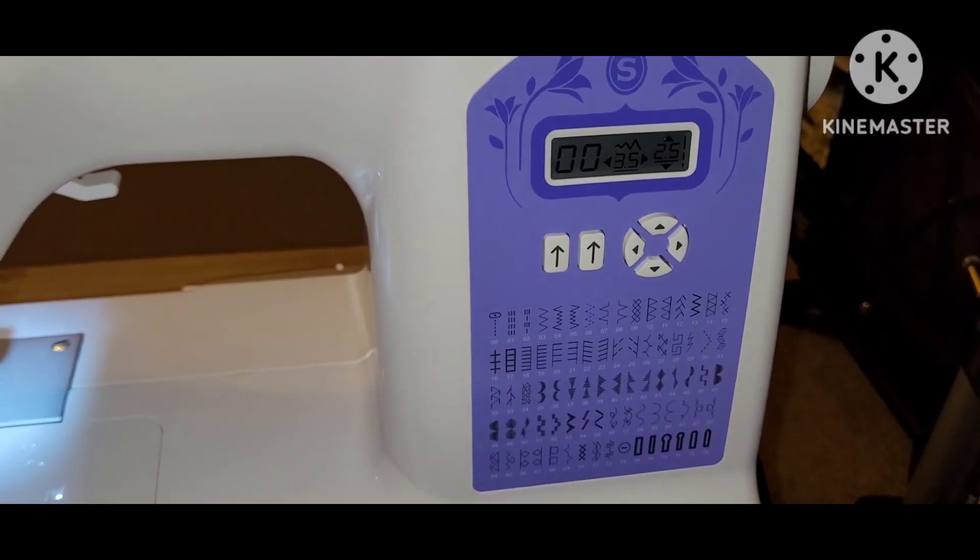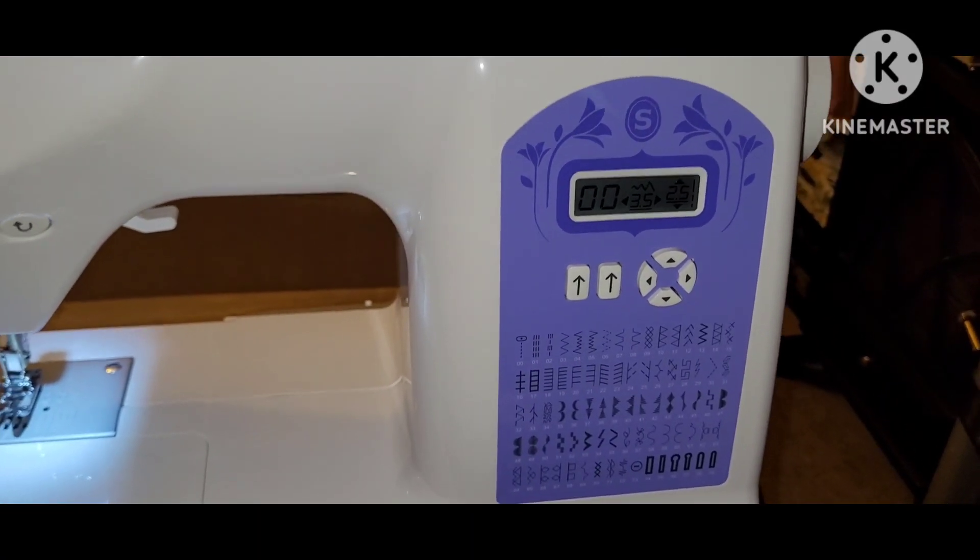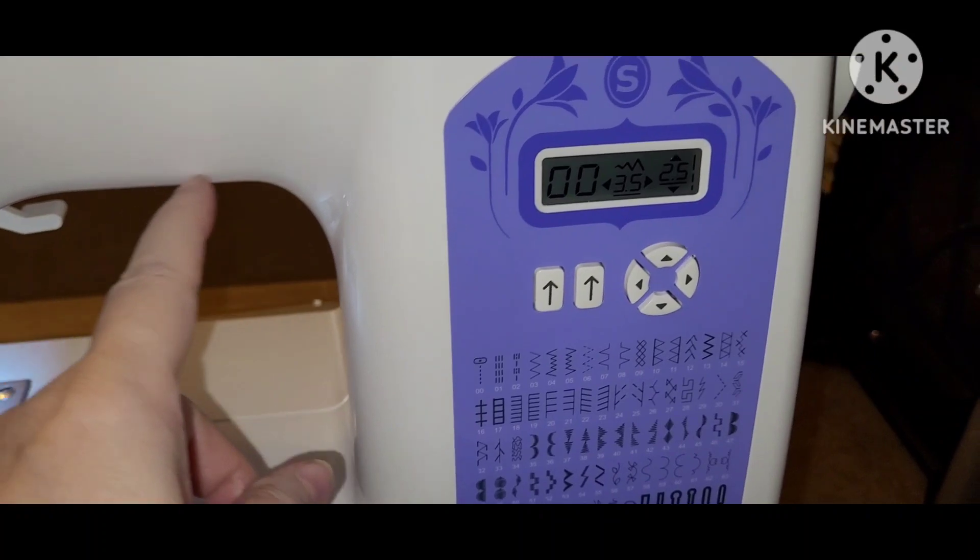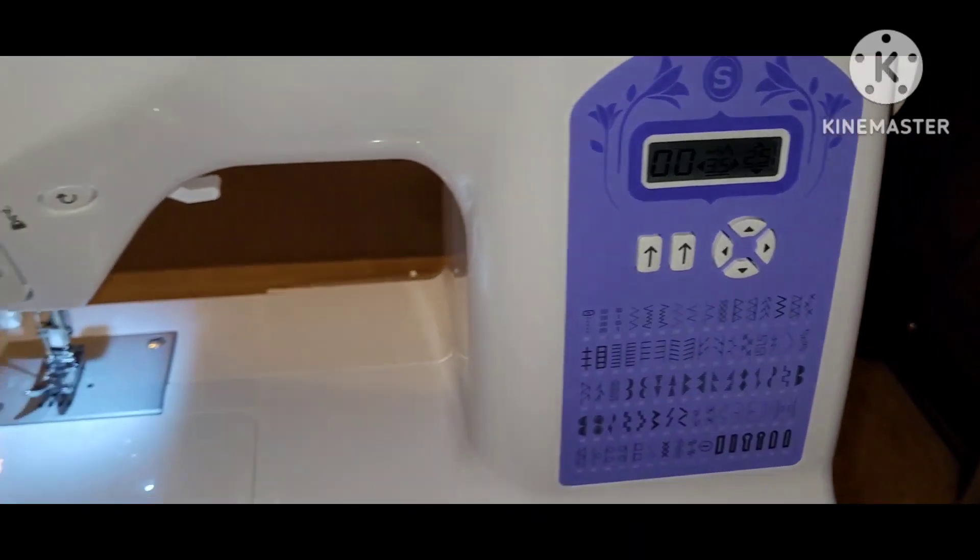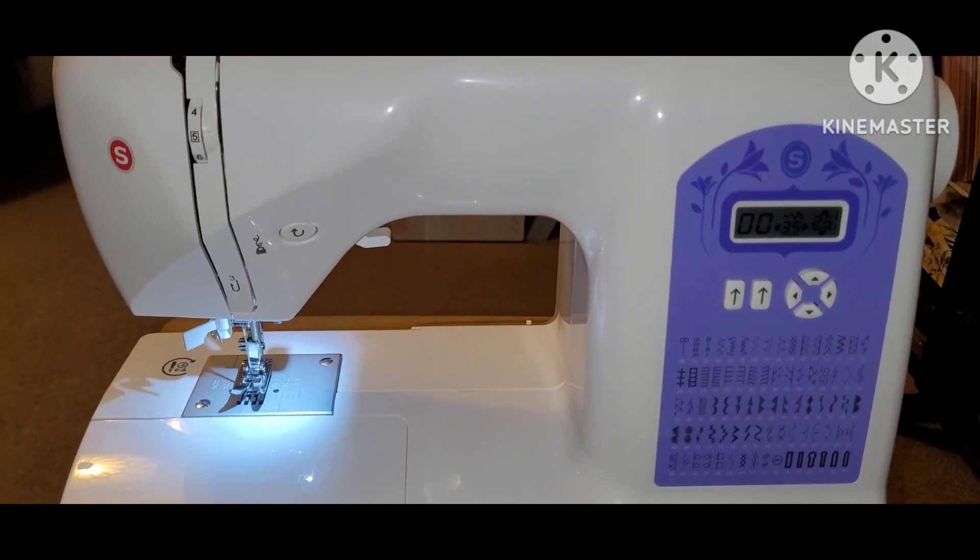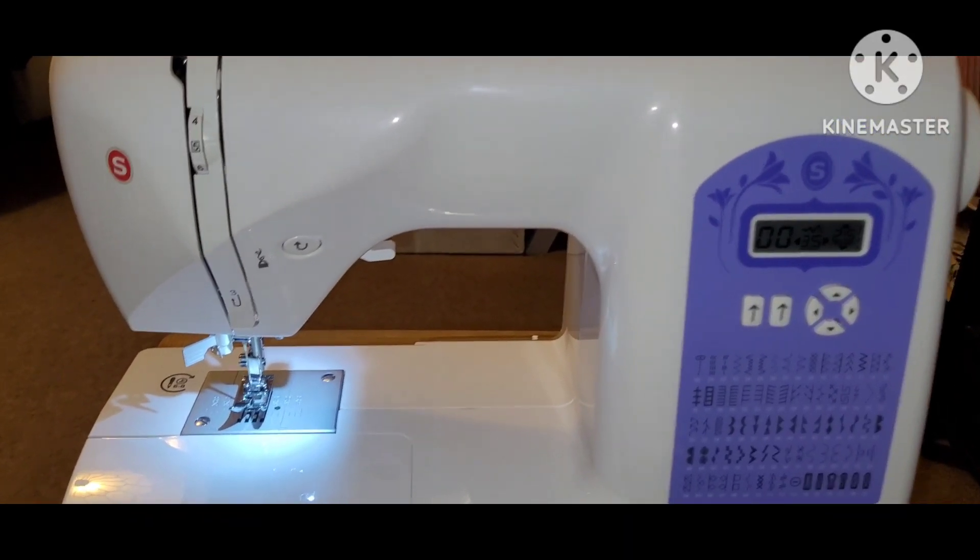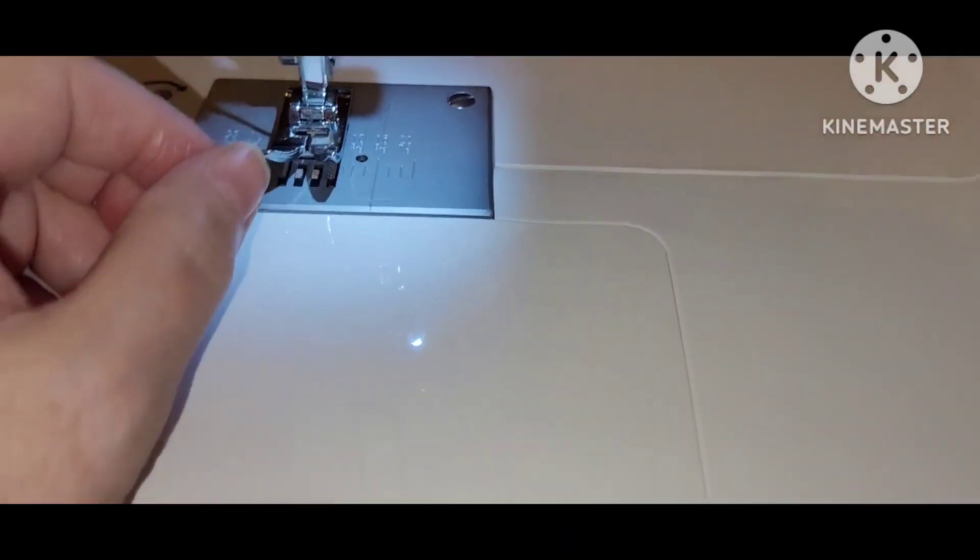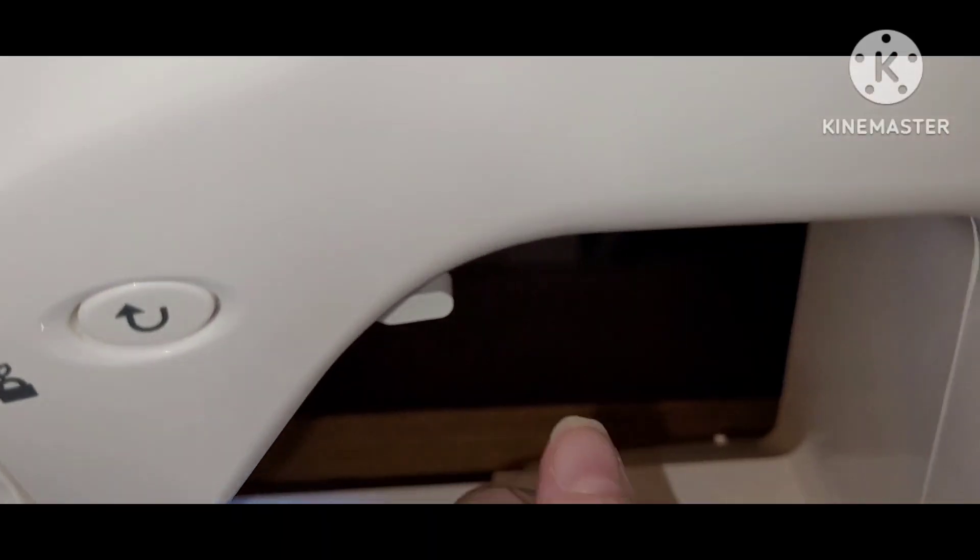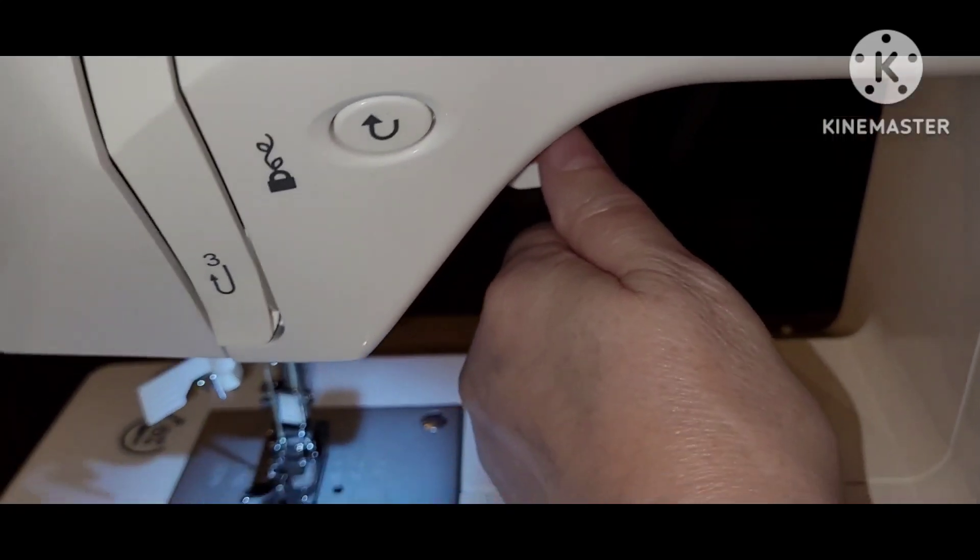But it does cast a shadow underneath here. The only reason I can see this is because of the light from the phone, so I think I'm going to add an additional light like I did before under here, which are LED lights. It's got an automatic threader, there's a presser foot attached that comes off, and there is a foot lowering lever here.